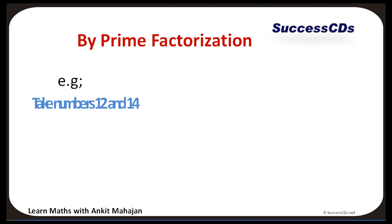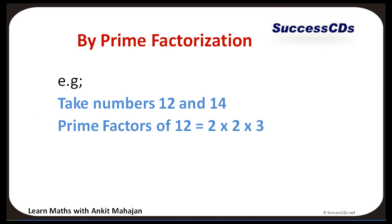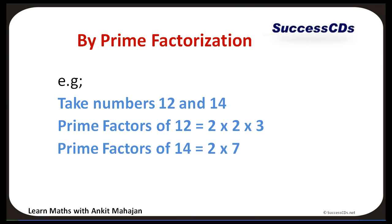For example, take numbers 12 and 14. The prime factors of 12 are 2, 2, and 3. The prime factors of 14 are 2 and 7. The prime factors of 12 and 14 have only 2 as their common factor. Therefore HCF is 2.